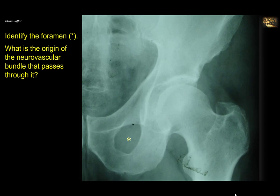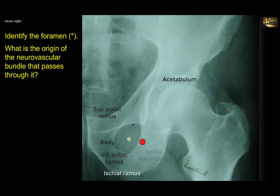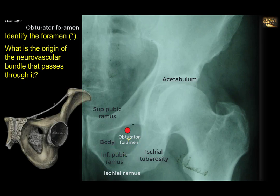Identify the foramen and state the origin of the neurovascular bundle that passes through it. This is an X-ray of the hip joint showing the acetabulum, head of the femur, superior ramus of the pubis, body of the pubis, inferior ramus, ramus of the ischium, and ischial tuberosity — all surrounding the obturator foramen. The foramen is closed in life by fascia; 'obturator' means closed. Most of it is closed, but a small part, the obturator canal, is left open.